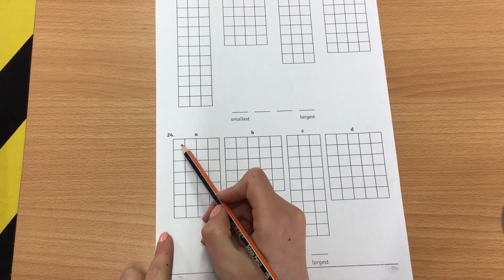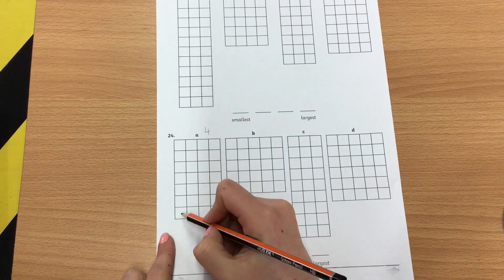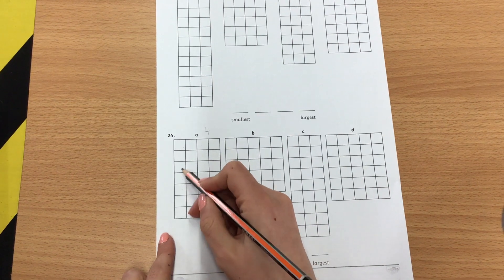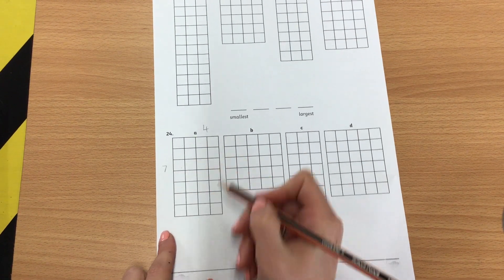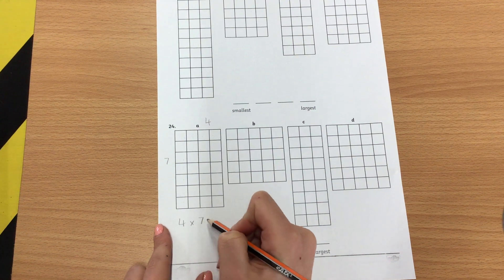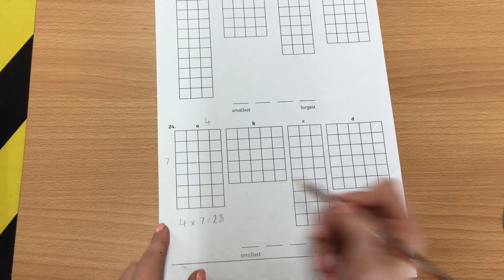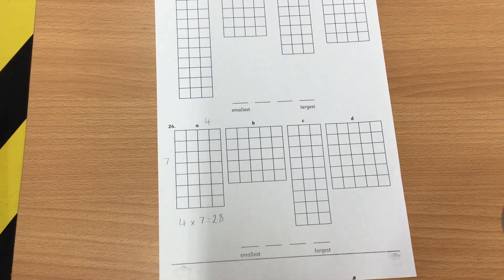So instead I might say well the width is 1, 2, 3, 4, the length is 1, 2, 3, 4, 5, 6, 7 and then I could do 4 multiplied by 7. Well 4 times 7 would give me 28 so I already know that one has an area of 28.